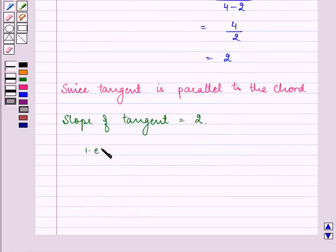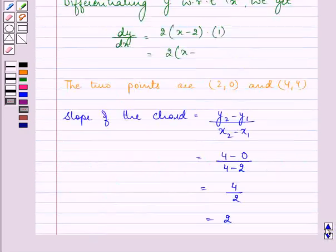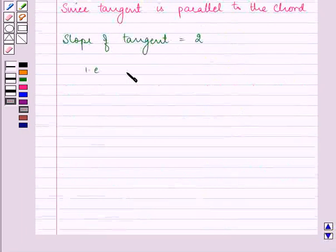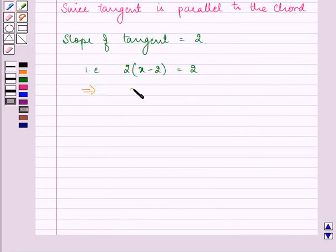We have dy/dx as 2(x-2). So we have 2(x-2) equals 2. On solving, we get x-2 equals 1, which means the value of x is 3.